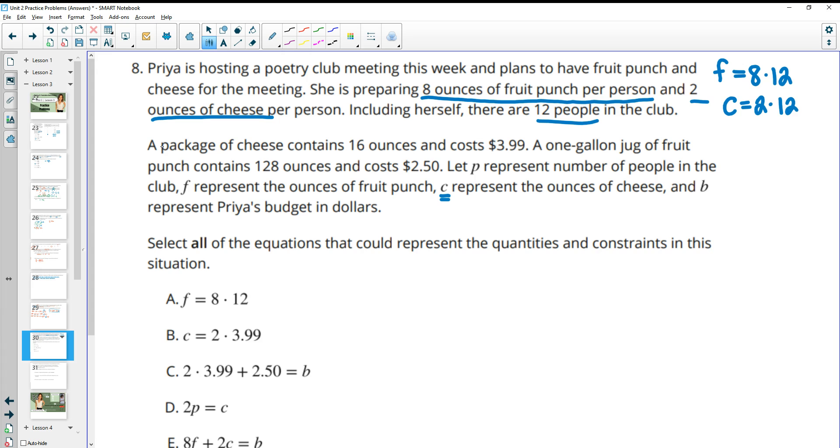All right, then in the next set, it says a package of cheese contains 16 ounces for $3.99. A one gallon jug of fruit punch contains 128 ounces and costs $2.50. So the other thing you're going to want to know is how much fruit punch you're going to need. So in this case, eight times 12 is 96 ounces and two times 12 is 24 ounces of cheese because then we're going to have to probably figure out how many packages we need. So I'm just going to leave those kind of sitting there.